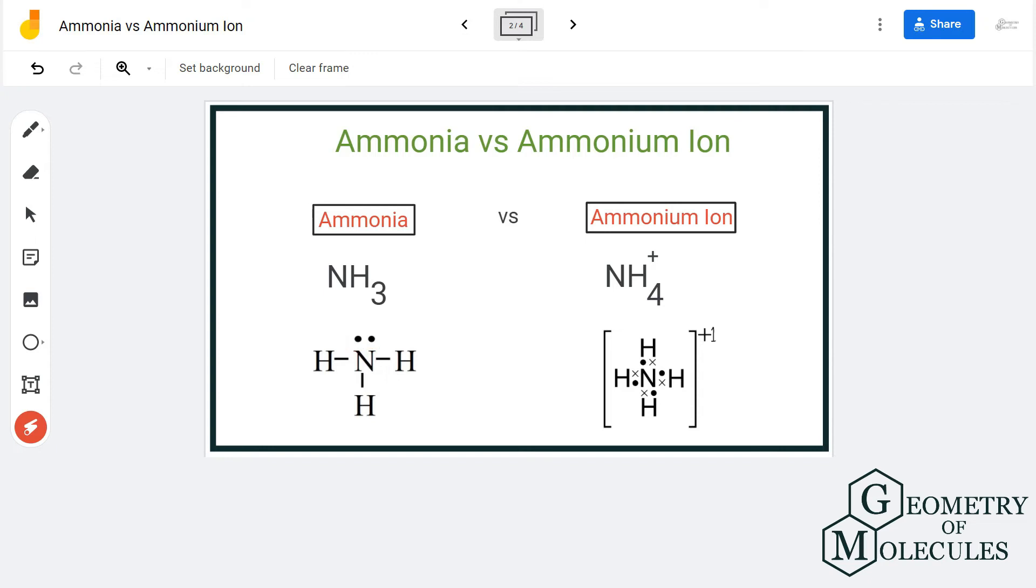We have kept these molecules in brackets and we have also added the charge to it because it is an ion. This is how we represent an ion, and there are no lone pairs of electrons for the nitrogen atom in ammonium ion as all the hydrogen atoms are bonding with the central atom. So there is a difference in Lewis structures for both ammonia and ammonium ion.